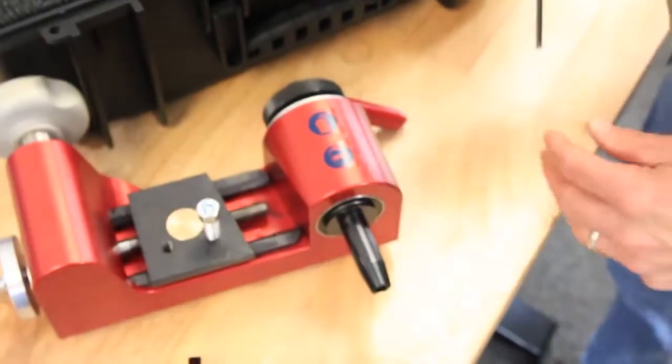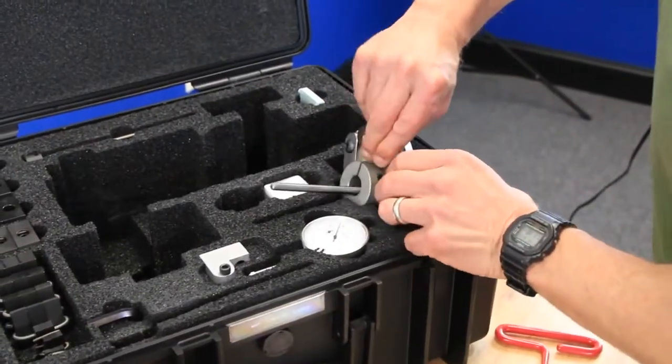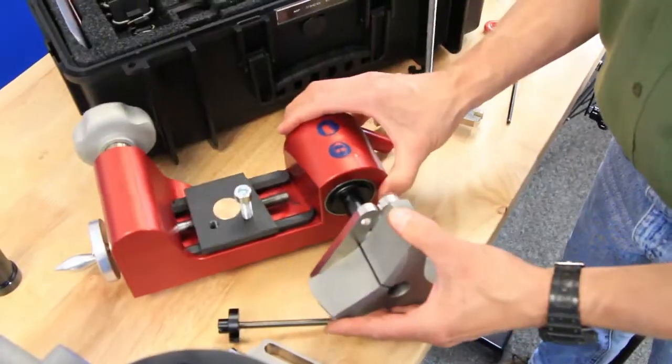To switch wedges, loosen the wedge screw and remove the wedge from the mandrel. Now slide the large wedge onto the mandrel and tighten it in place.